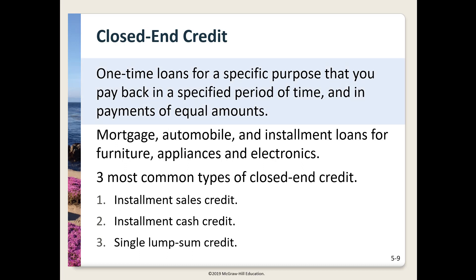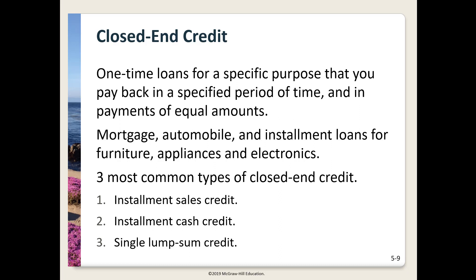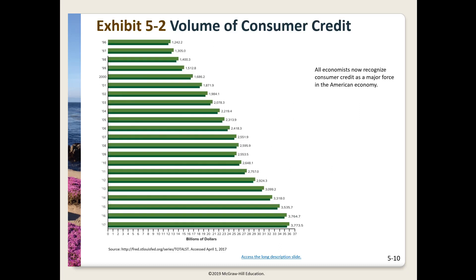Closed-end credit involves one-time loans for a specific item, to be paid off over a specified schedule. Mortgages, car loans, and that TV at Best Buy are all examples. The three most common types are: installment sales credit, which allows you to purchase large-ticket items like furniture, a car, or a home, usually requiring a down payment and a contract; installment cash credit, where you receive cash for home improvement or vacation expenses with usually no down payment; and single lump-sum payment, used for a single item with repayment of principal plus interest, usually short-term, 30 to 90 days.